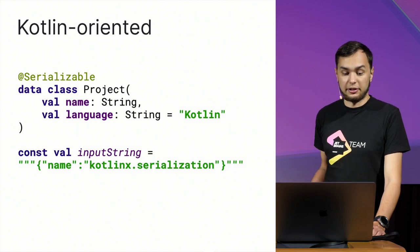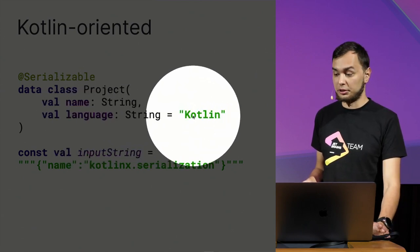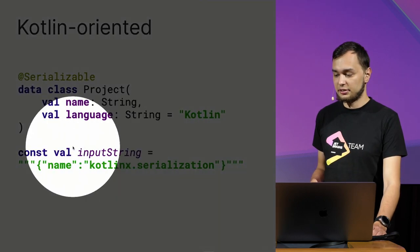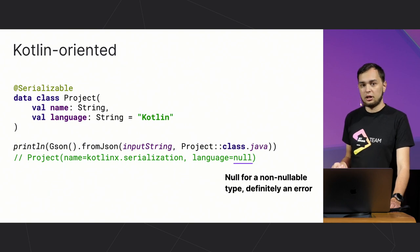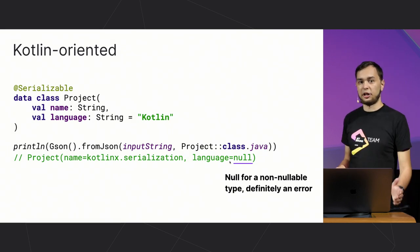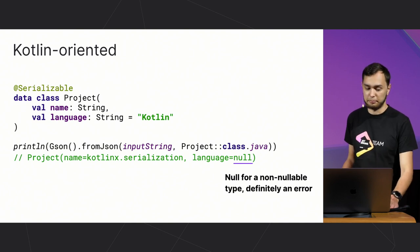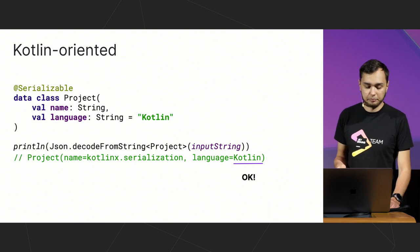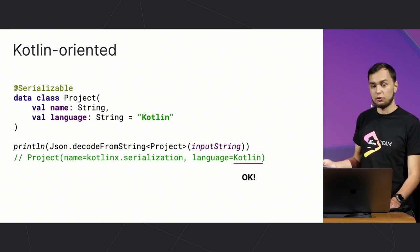Why is it called a Kotlin-oriented library? Let's start with a simple example. We have a data class Project that has a name, which is a string, and a language property, which is also a string and has a default value of Kotlin. If we try to parse a JSON that has a name property but doesn't have a language using a Java library, we find out it doesn't know anything about Kotlin default values. So language would be null, which breaks the type system — we now have a non-nullable property set to null, leading to runtime crashes and bugs.